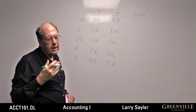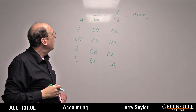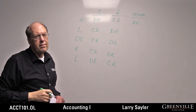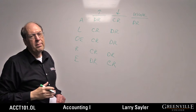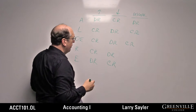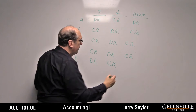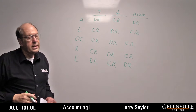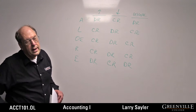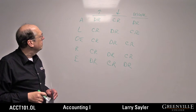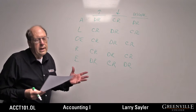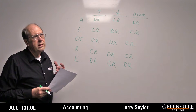This doesn't mean a lot to you right now, but over the next couple of weeks you'll begin to see what this means. An asset usually has a debit balance — cash, accounts receivable, inventory. Liabilities usually have a credit balance. Owner's equity accounts usually have a credit balance. Revenue accounts usually have a credit balance. Expense accounts usually have a debit balance.